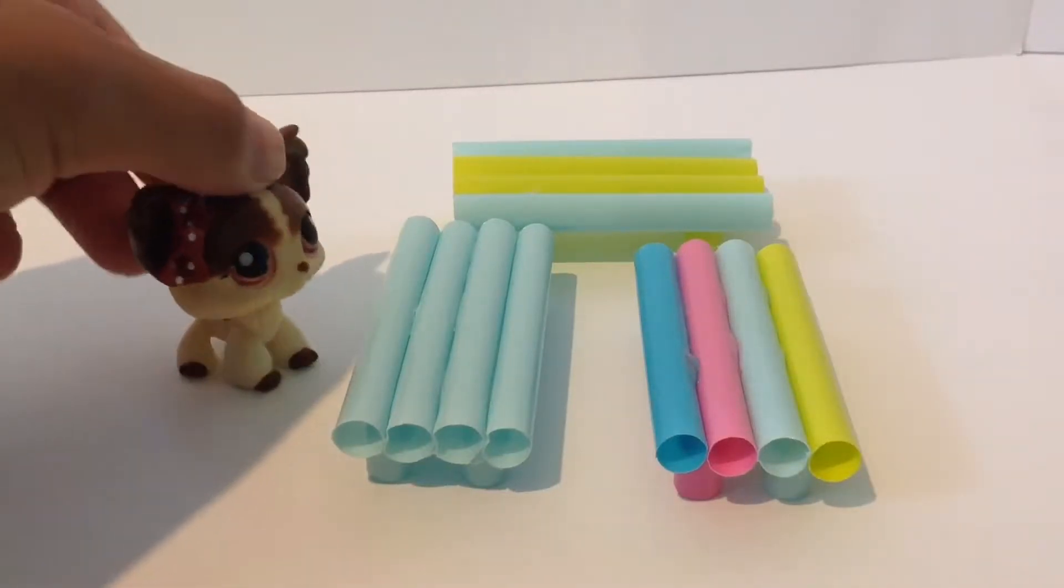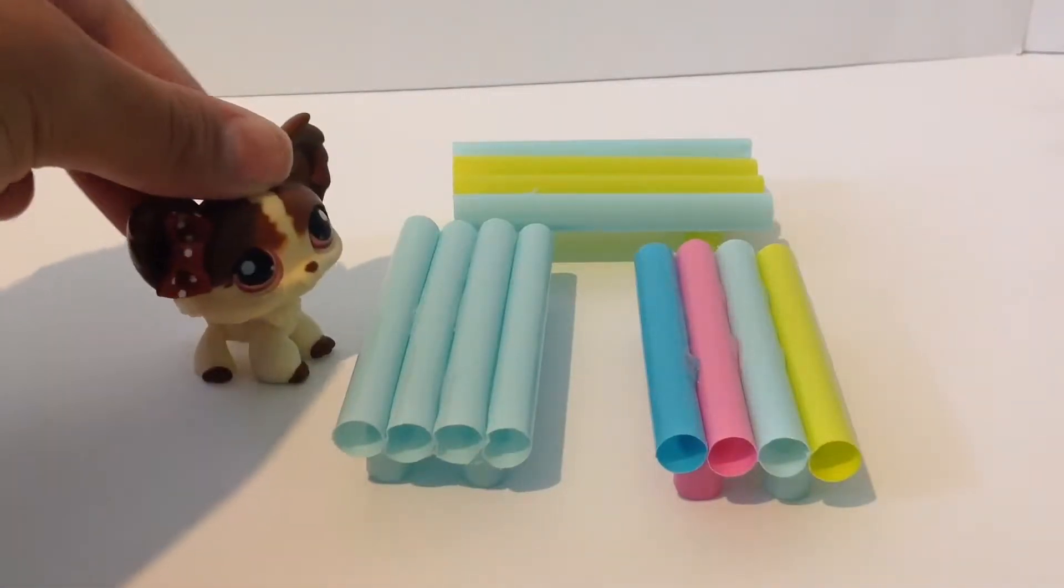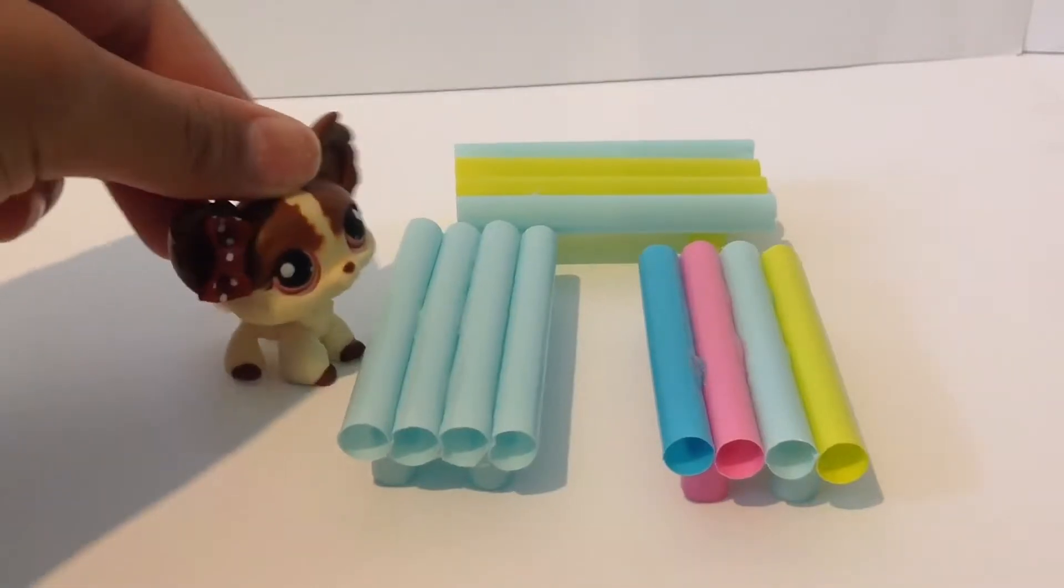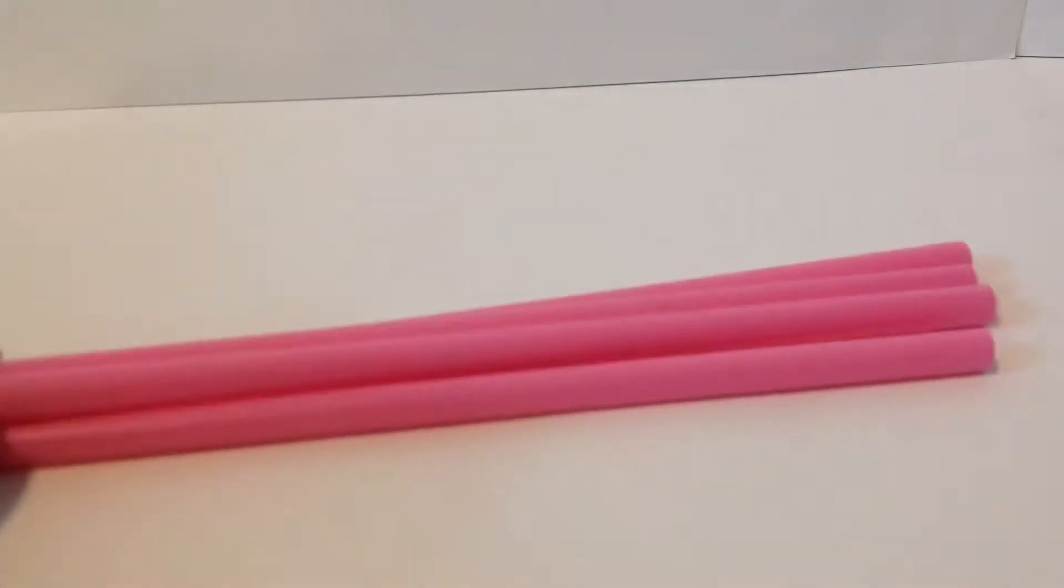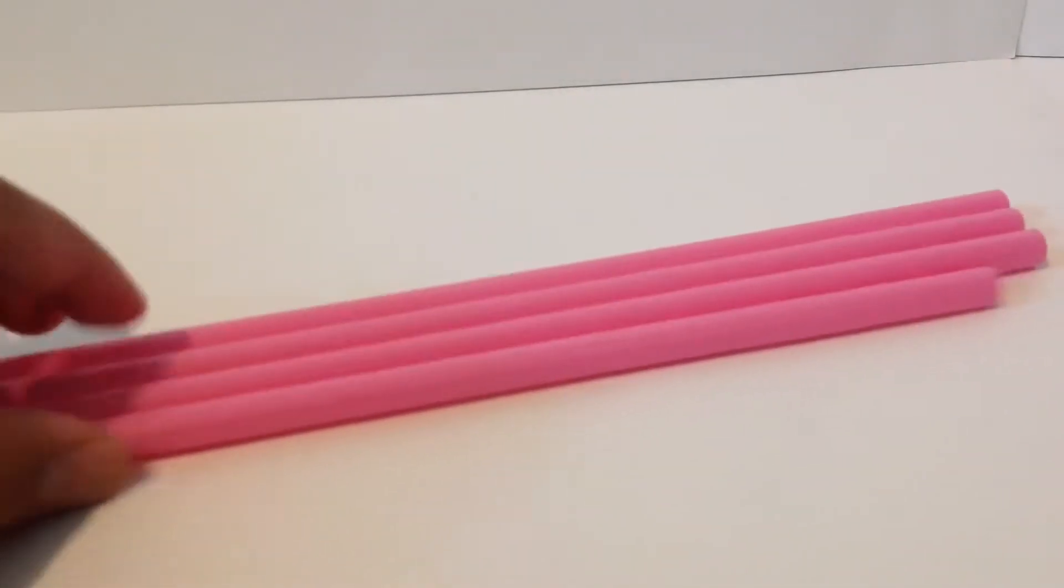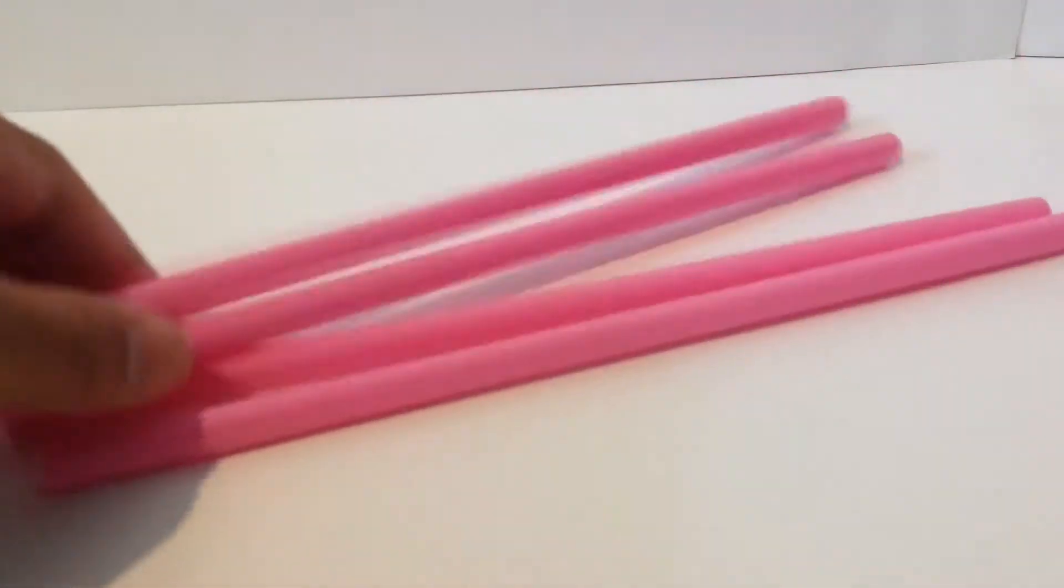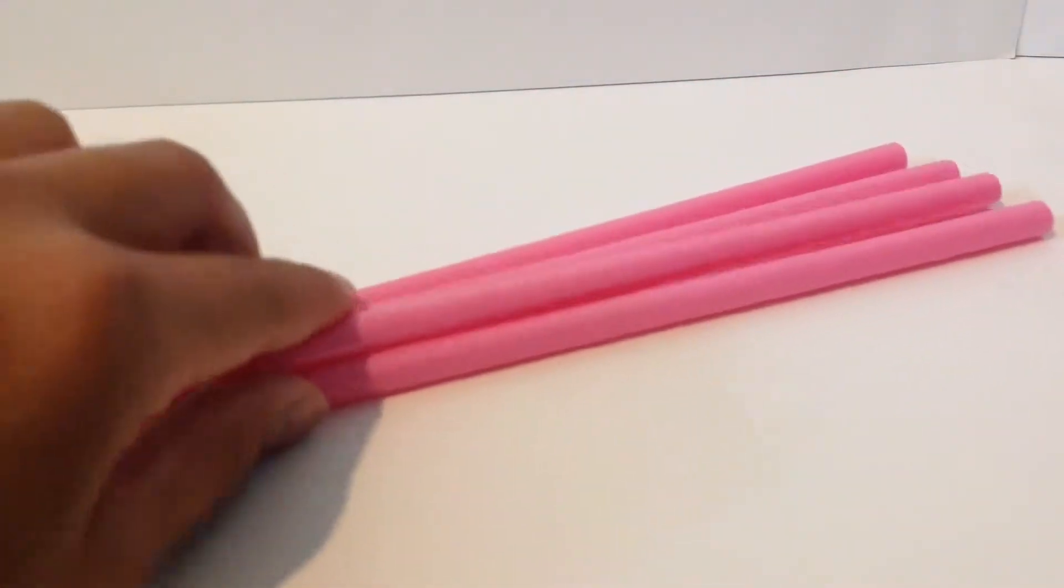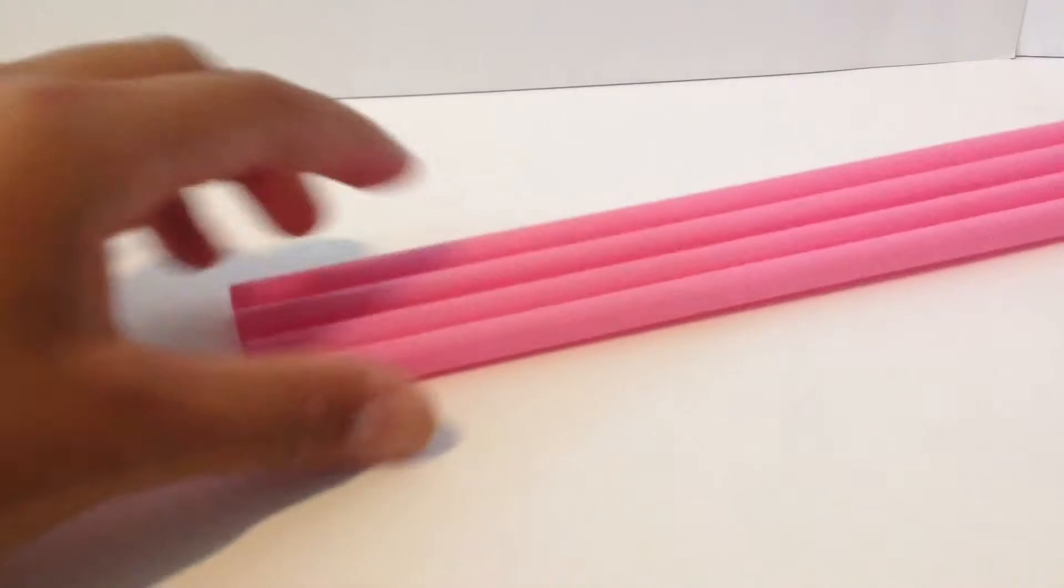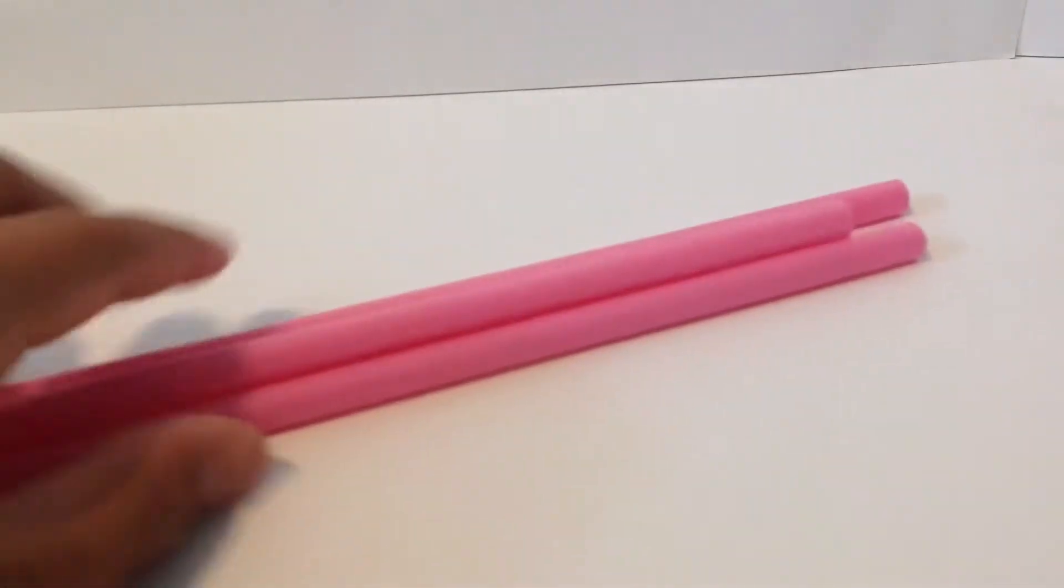Let's get started on making these straw tables. The first thing you'll need are straws, not bendy straws. I got mine at IKEA. You can get yours at Target, Dollar Store, or any store you can find straws, but make sure they're not bendy straws.